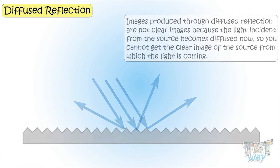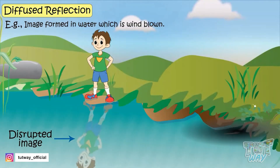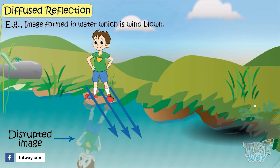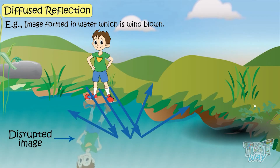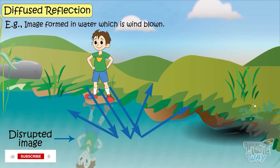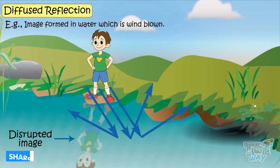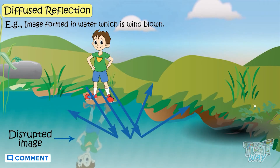So you cannot get a clear image of the source from which the light is coming. For example, images formed in water which is windblown — the picture is not clear, it is hazy. Because the light coming from the source is now reflected from the uneven water surface in many directions, and the result is a disrupted image. The reflection from such a rough surface is called diffuse reflection.